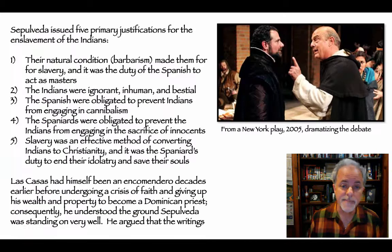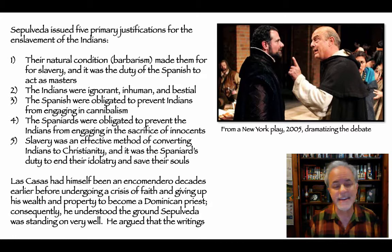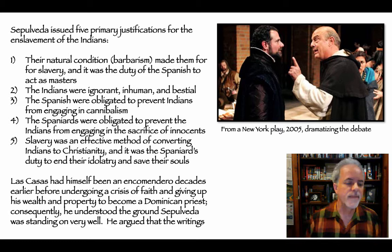Barbarians, Aristotle further argued, were men whose natural state was slavery. Sepulveda also used the writings of Oviedo, who described the Indians as idle, untruthful, evil, undependable, forgetful, and cowardly — not surprisingly, as he had made a lot of money exploiting them. Sepulveda issued five justifications for enslavement: first, their natural condition of barbarism made them fit for slavery; second, they were ignorant, inhuman, and bestial; third, the Spanish were obligated to prevent cannibalism; fourth, to prevent sacrifice of innocents; and fifth, slavery was an effective method of converting Indians to Christianity.